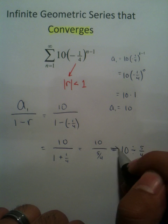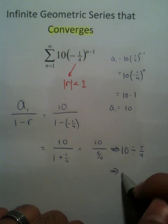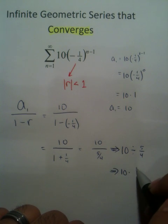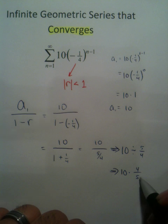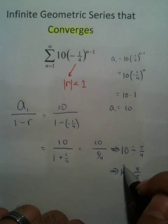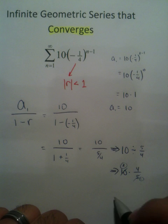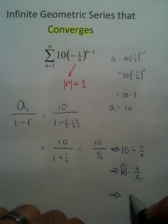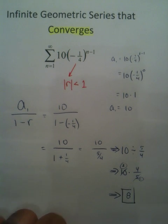Now, you can rewrite that. Obviously, we want to rewrite it using multiplication. So we've got 10 times four-fifths, cross-cancel, that becomes a 2, that becomes a 1. So the answer is 8.